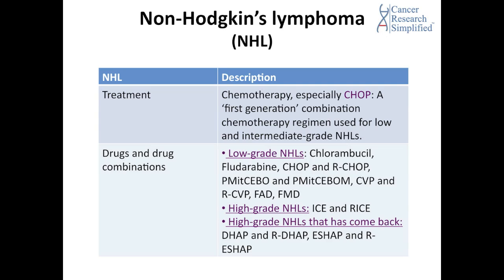For low grade non-Hodgkin's lymphoma: chlorambucil, fludarabine, CHOP and R-CHOP, PMITCEBO and PMITCEBUM, CVP and R-CVP, and FND or FMD. For high grade non-Hodgkin's lymphomas: ICE and R-ICE. For high grade non-Hodgkin's lymphomas that have come back: DHAP and R-DHAP, ESHAP and R-ESHAP.